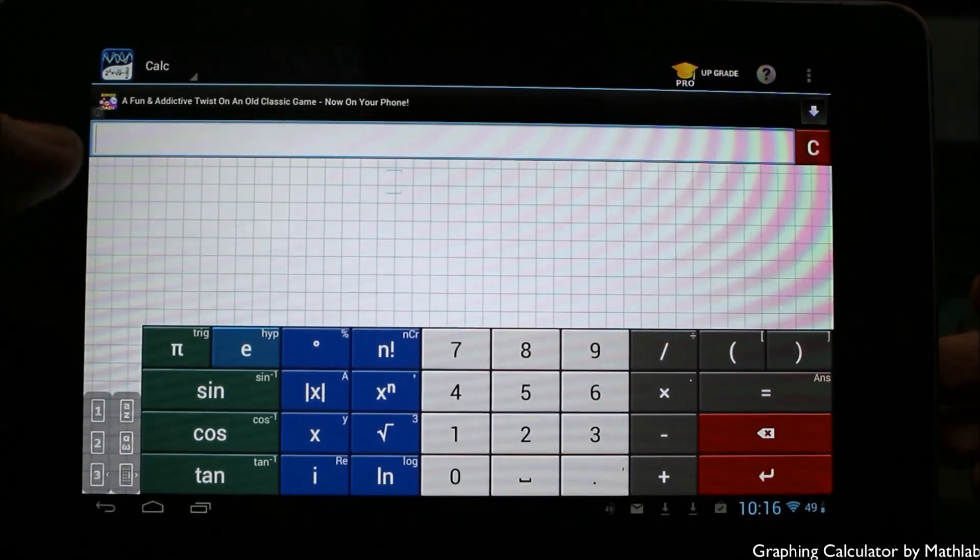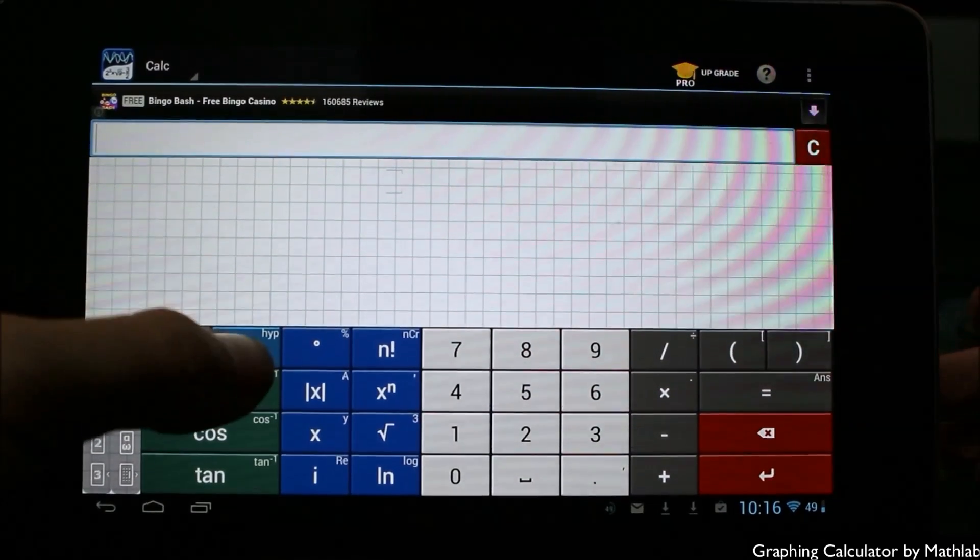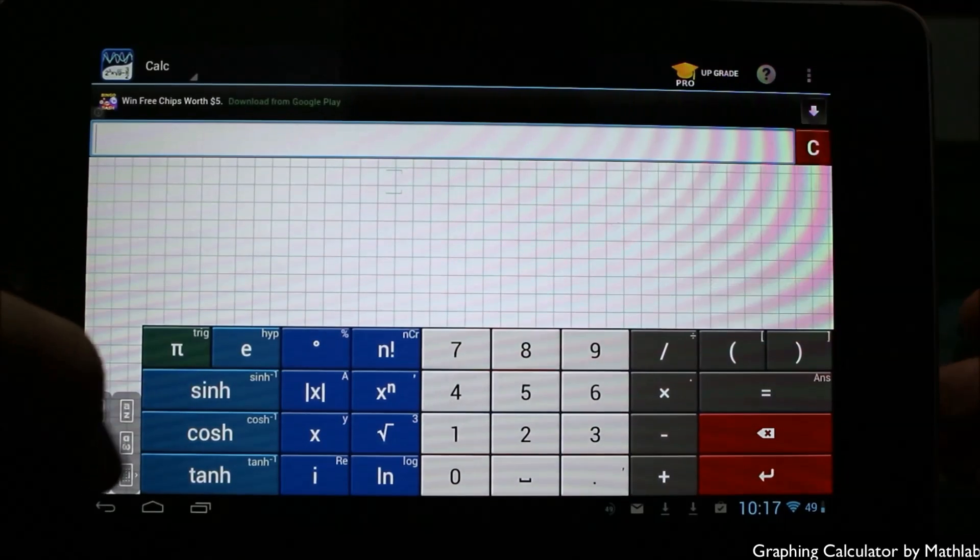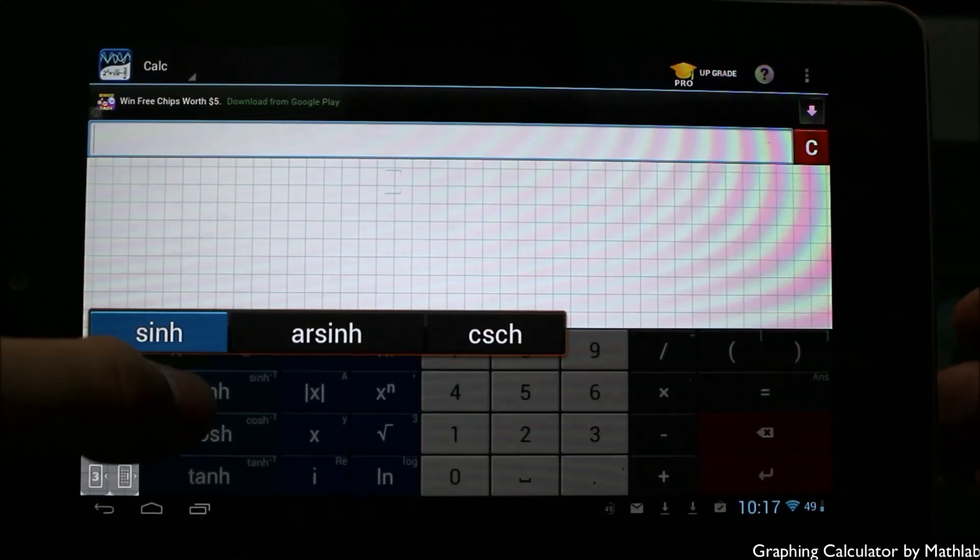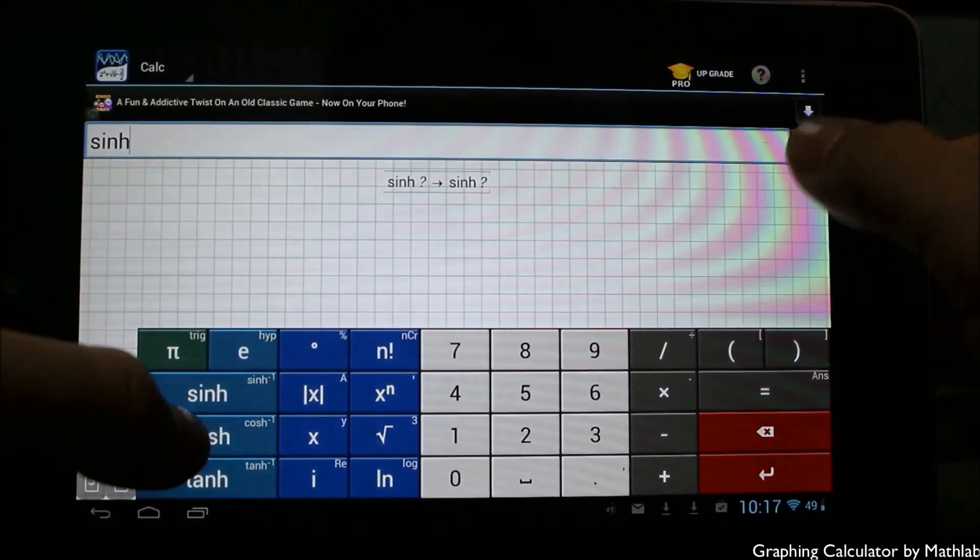If you want to get hyperbolic functions, you tap on the e here and now you'll see there they'll change sine, cosine, tangent to blue. If I hold on something like sine, for example, you can see I get more options: arc sine, cosecant. I can simply just drag left or right to get to those options. The same thing would be that for cosine or tangent.